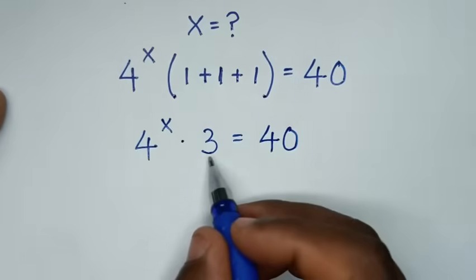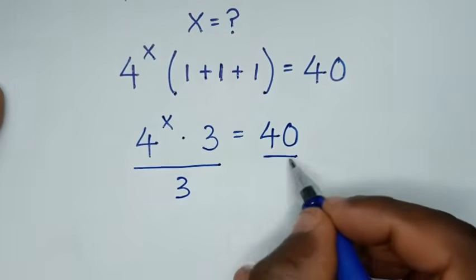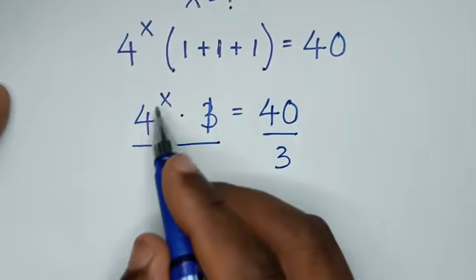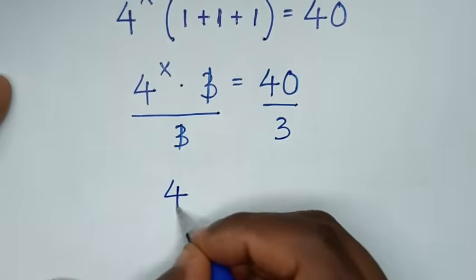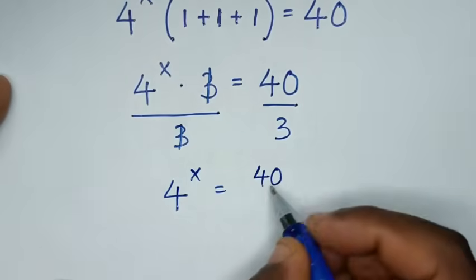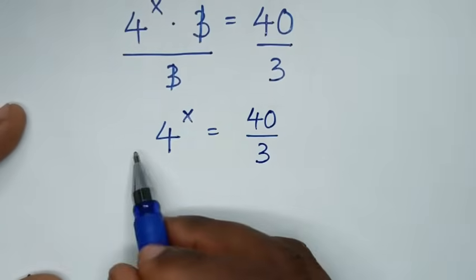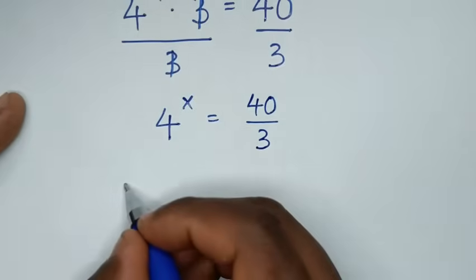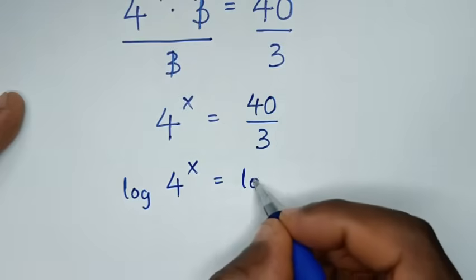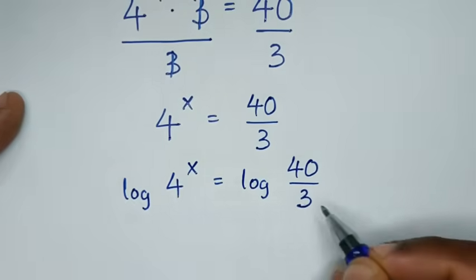We divide both sides by 3. The 3 cancels on the left side, so it becomes 4^x = 40/3.